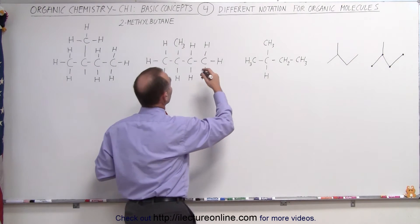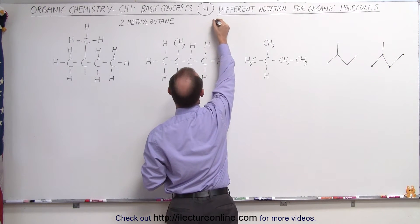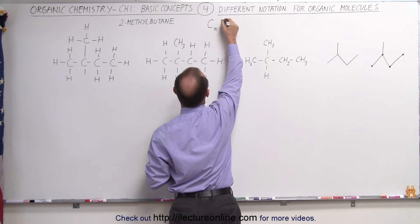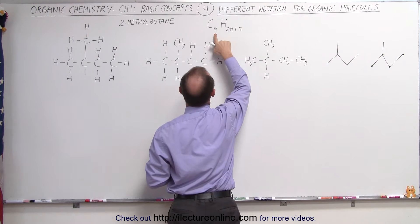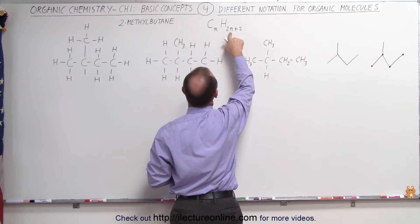So the general formula for an alkane would be C sub n H sub 2n plus 2. So for five carbons there would be 10 plus 2 or 12 hydrogens.